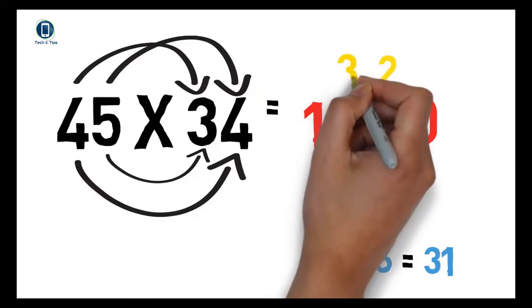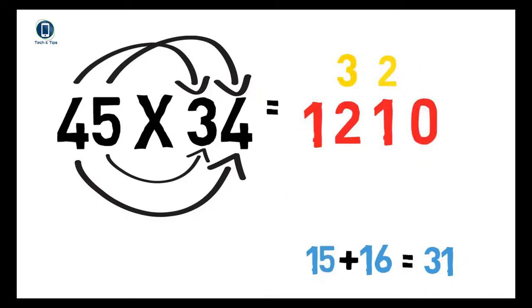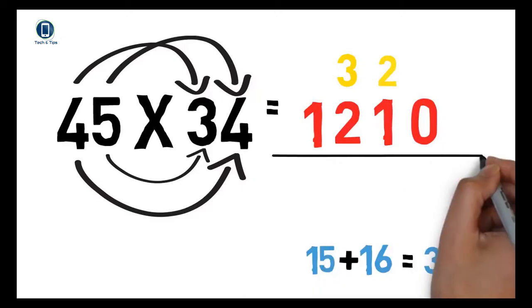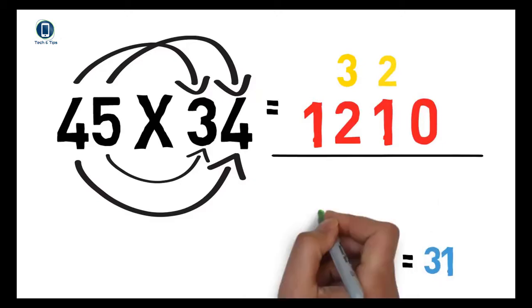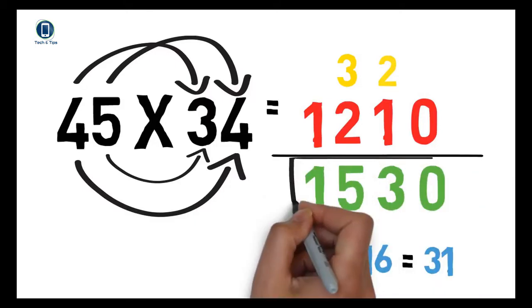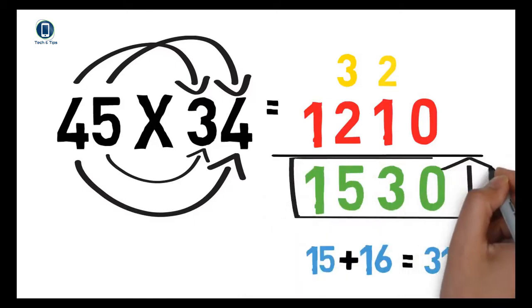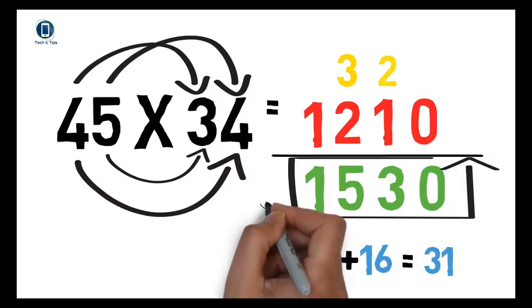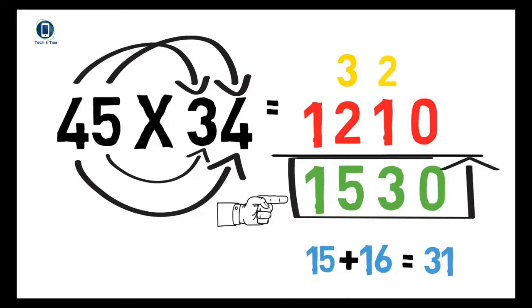get our answer: 1530. So 45 × 34 equals 1530. This is our answer. I hope this video is very important for all those who want to learn a very easy trick for multiplying two-digit numbers.